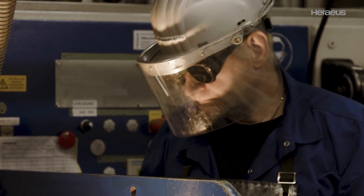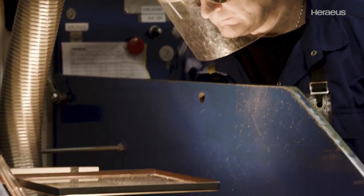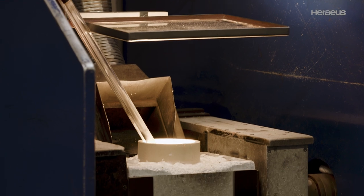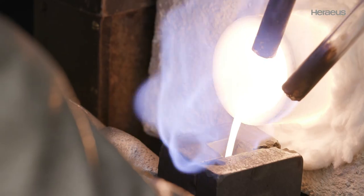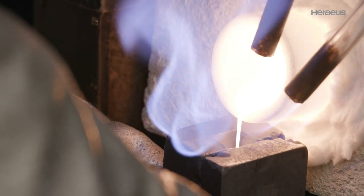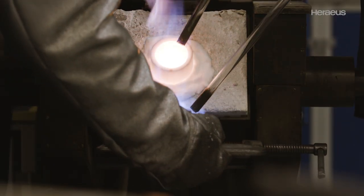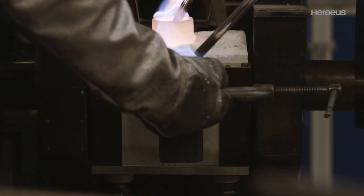To protect the liquid melt against chemical reactions, the melting bath is covered with a protective atmosphere. As soon as the material is liquid and well mixed, it is cast into a mold to form a solid ingot.